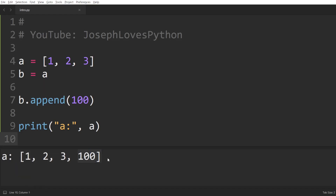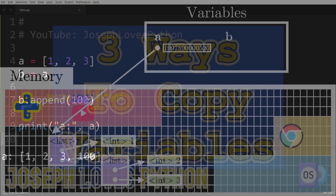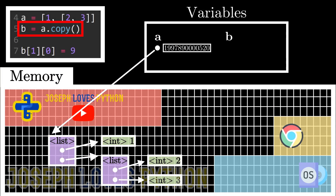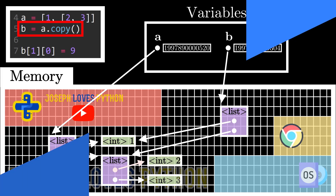In this video, we'll discuss the three ways in which we can copy a variable's value into another variable, understanding exactly what each of these methods does at a fundamental level, and ultimately giving you the confidence to write professional-grade Python code.